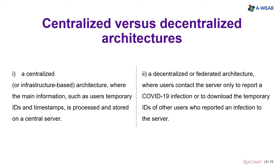The second is a decentralized or federated architecture, where users keep on their own devices the relevant information such as their own temporary IDs, neighbors' temporary IDs, and timestamps. They contact the server only to report a confirmed infection case or to download temporary IDs of other users who reported an infection to the central server.